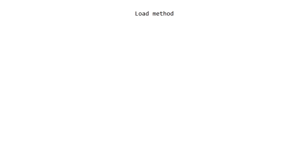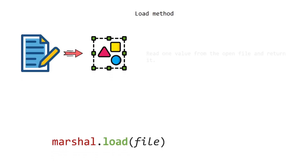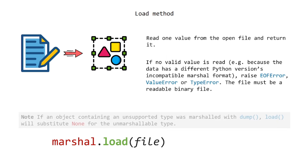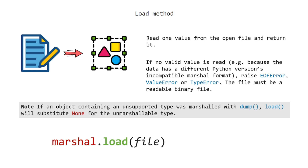The load method reads one value from the open file and returns it. If no valid value is read — for example because the data has a different Python version's incompatible Marshall format — it raises an EOFError, ValueError, or TypeError. The file must be a readable binary file. Note: if an object containing an unsupported type was marshaled with dump, load will substitute None for the unmarshallable type.